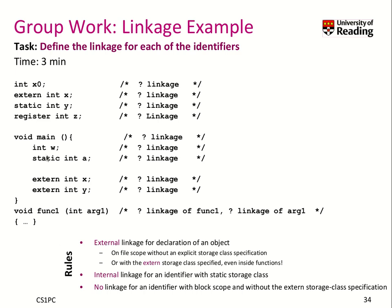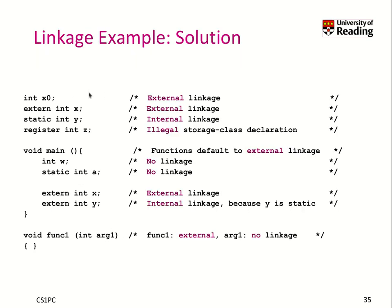Alright, maybe you spotted that not all of those linkages are actually possible. Let's get started. x0 is externally linked. Then we have x, which is also external because we explicitly said so. Then we have internal linkage because static means it's only visible within the compilation unit. The register keyword here is invalid — register can only be used as an argument to a function or within a local block.